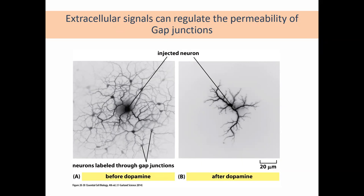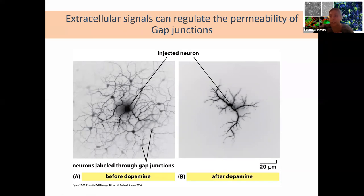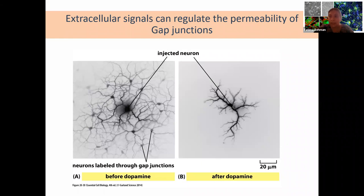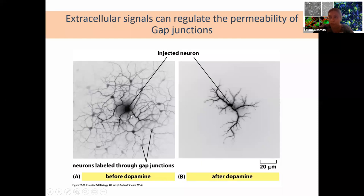After dopamine treatment, the gap junctions close up. Immediately after dopamine treatment, if you inject neurons, the signal will not transfer the same way—it will be inhibited and restricted to where you injected it. Versus if dopamine wasn't present, the signal would have traveled all across that neural network through the gap junctions.